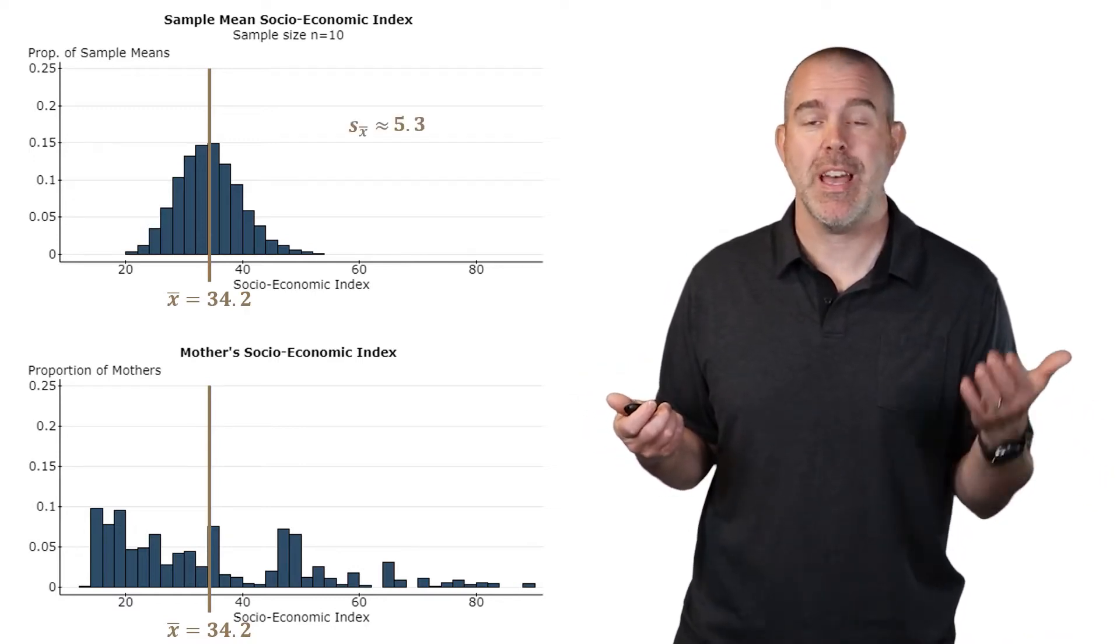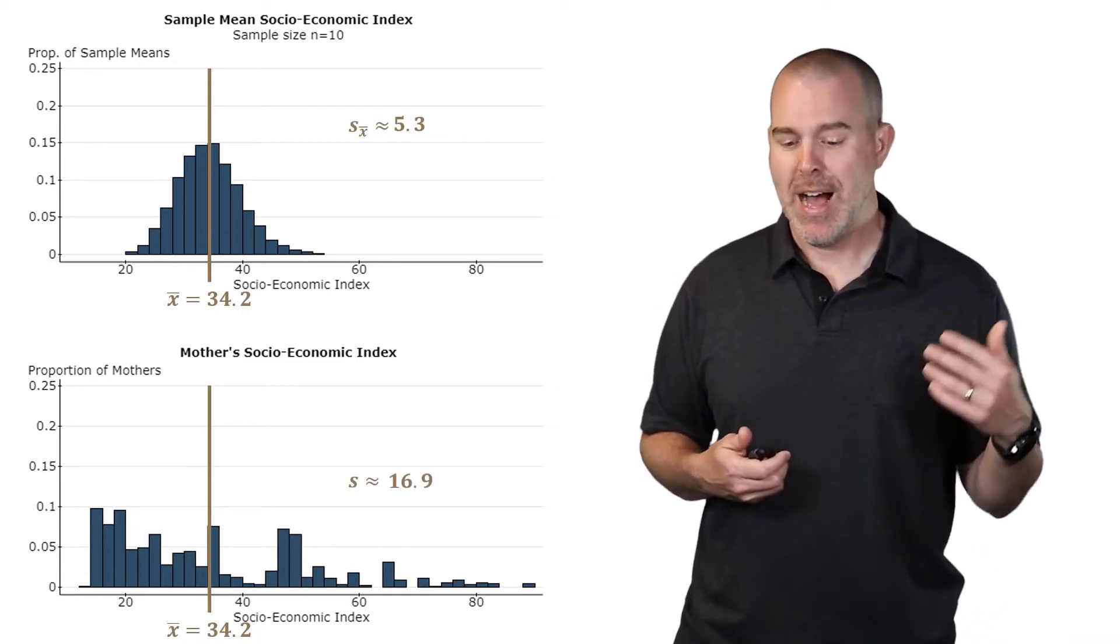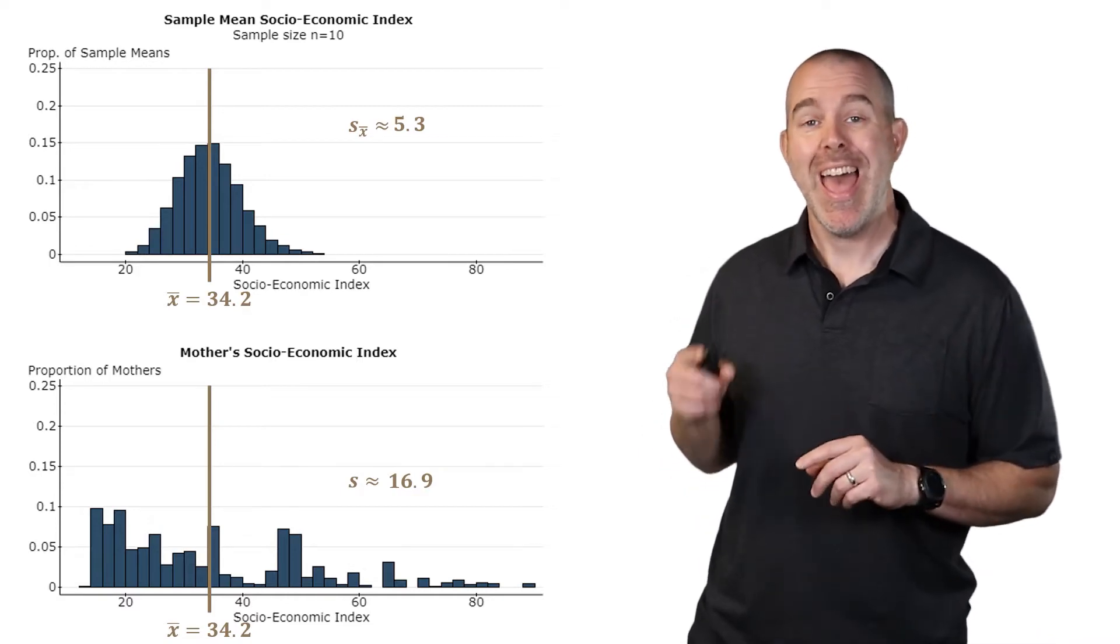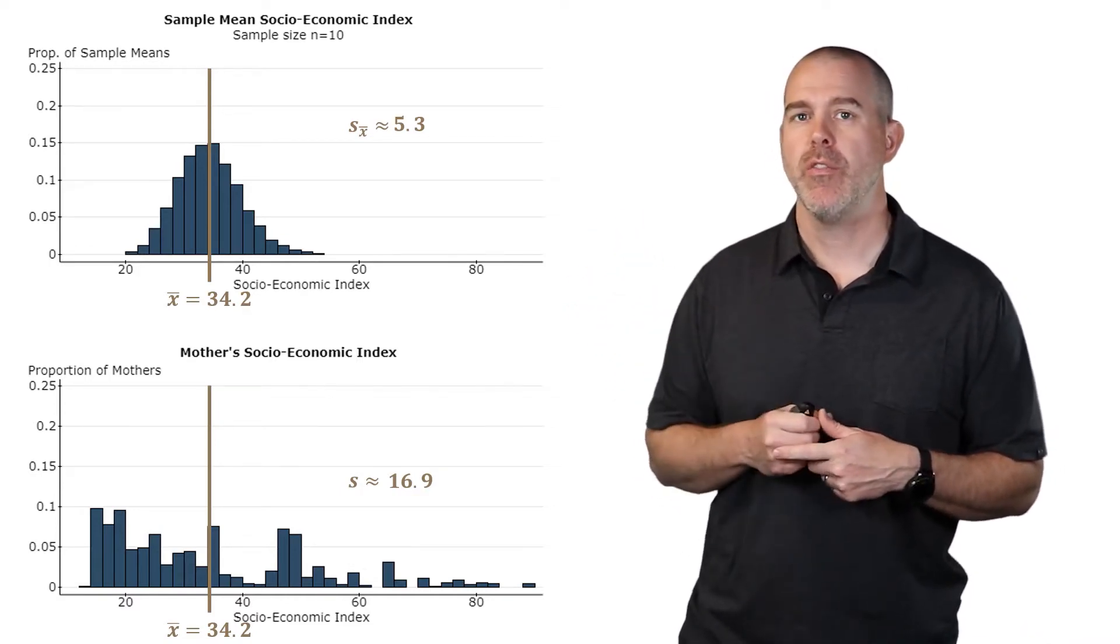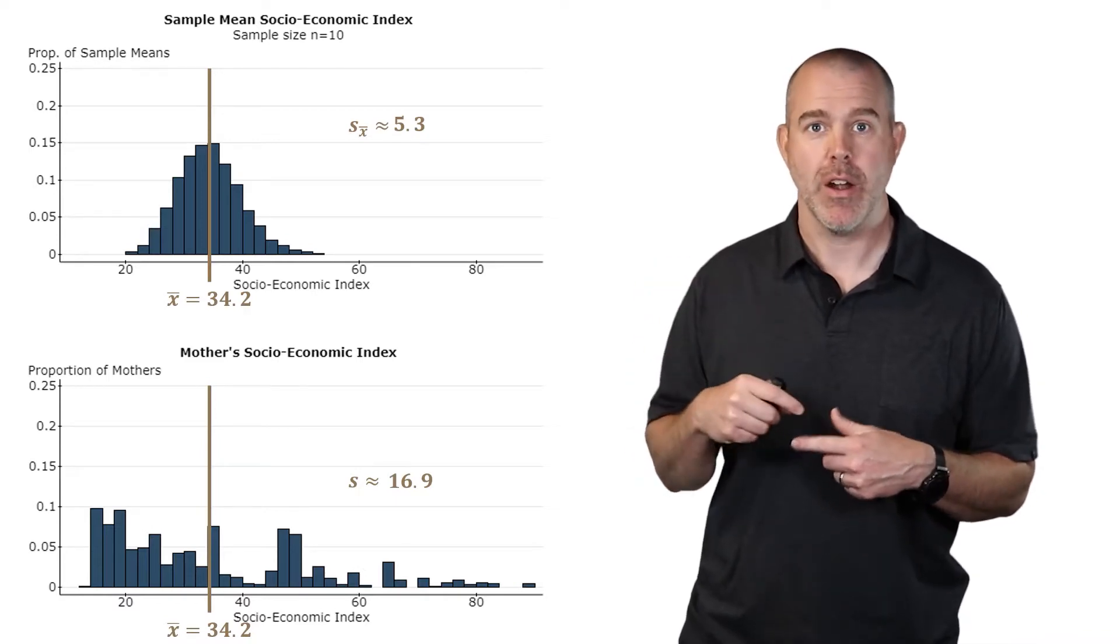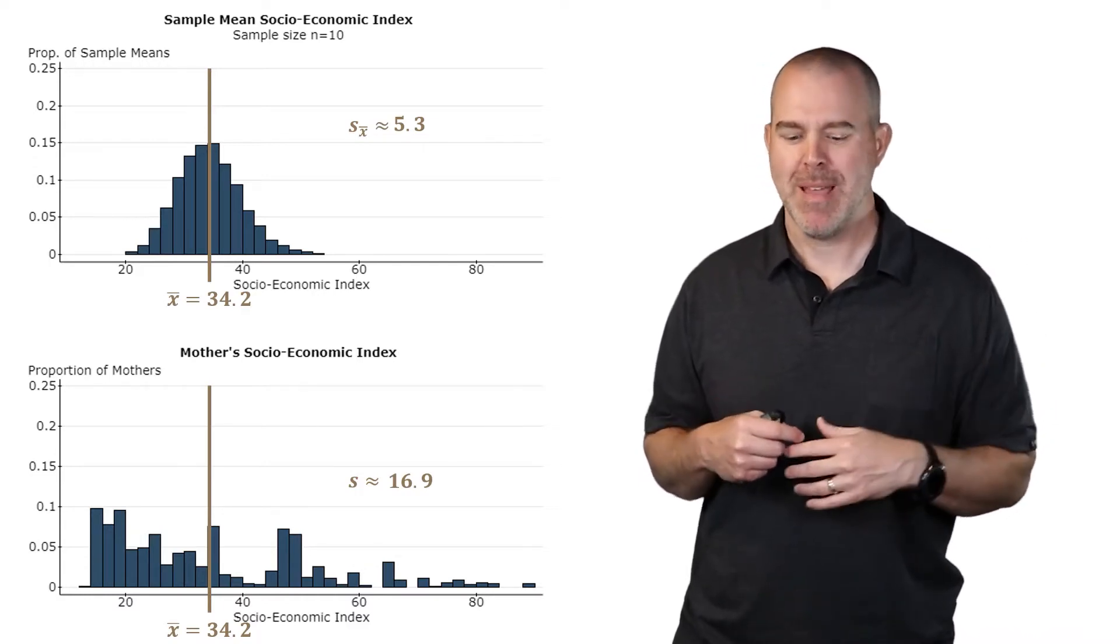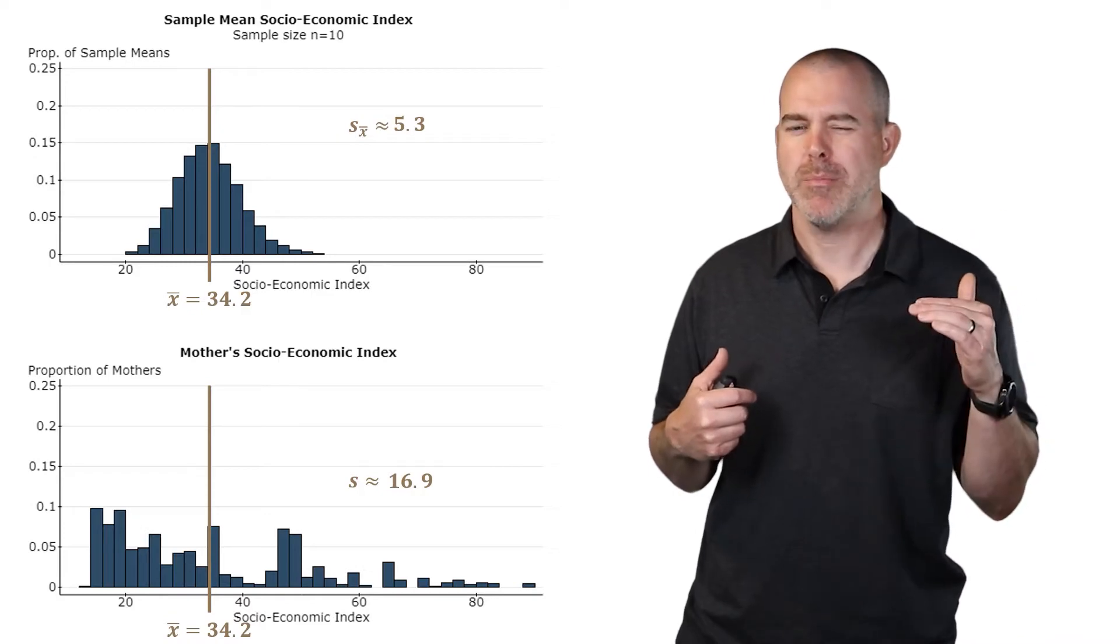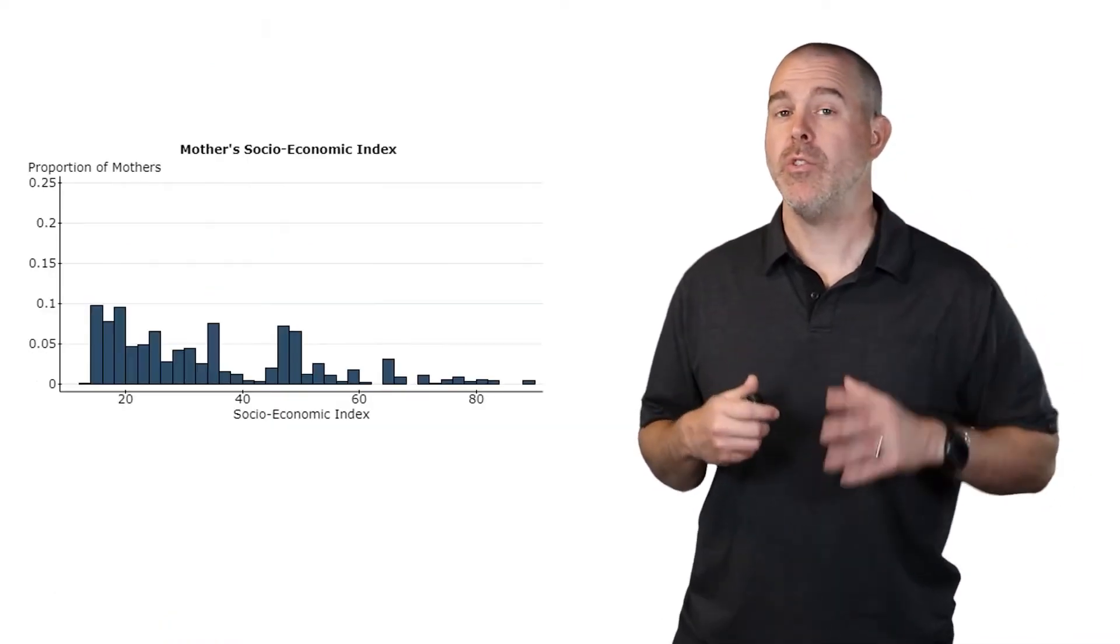The standard deviations, as we said, it's much smaller, 5.3 for the sample means, and then 16.9 overall. By the way, notationally here, s is the sample standard deviation. You'll notice a subscript for the sample means, s sub x bar. So the standard deviation of the sample means. I didn't do that for the x bar because it felt weird to write x bar sub x bar, but it's really the sample mean of the sample means.